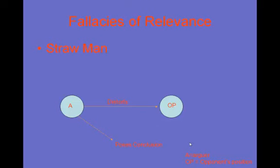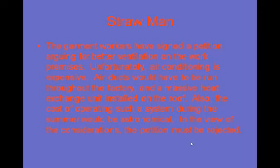The fallacy of relevance called straw man is a situation where the arguer distorts his opponent's position and then poses a conclusion. Example: 'The garment workers have signed a petition arguing for better ventilation on the work premises. Unfortunately, air conditioning is expensive. Air ducts would have to be run throughout the factory and a massive heat exchange unit installed on the roof. Also, the cost of operating such a system during the summer would be astronomical. In view of these considerations, the petition must be rejected.' The simple request for better ventilation has been distorted into a request for air conditioning, which is easy to reject — unlike the original argument for better ventilation.